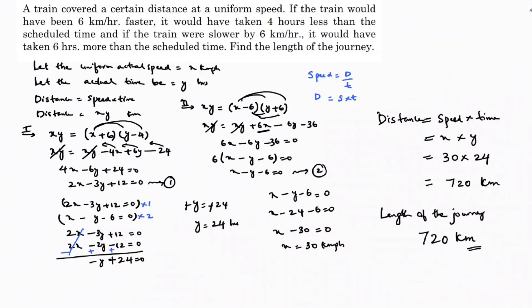In this way, I solved the problem with the help of the speed formula: speed equals distance by time. I wrote two equations in terms of distance, where distance is speed into time. The length of the journey is 720 kilometers.